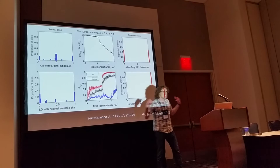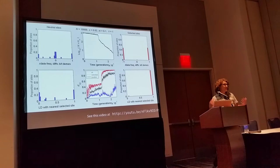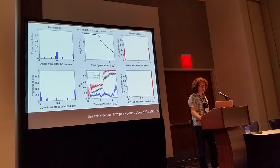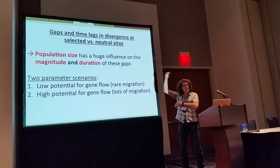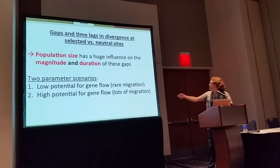The reason that gap is interesting is that when it exists, the things we call outliers — the strongly diverged sites — should provide generally good signals of the loci actually involved in population divergence. Whereas when this gap doesn't exist, we have a much greater proportion of false positives. So I want to understand the conditions under which we see these big gaps and how long they last during the process of speciation with gene flow.